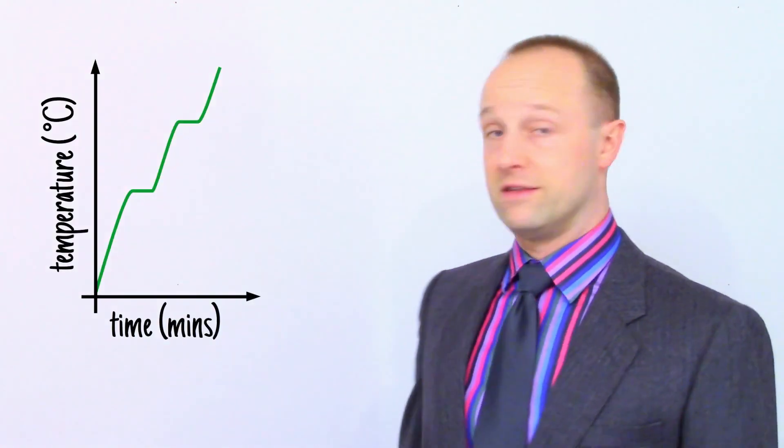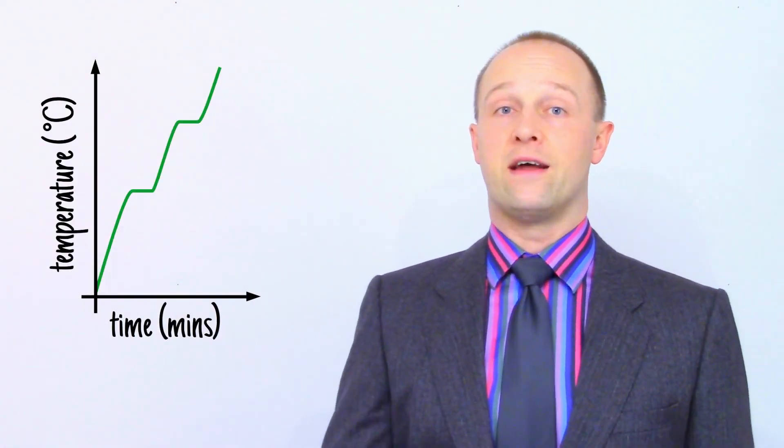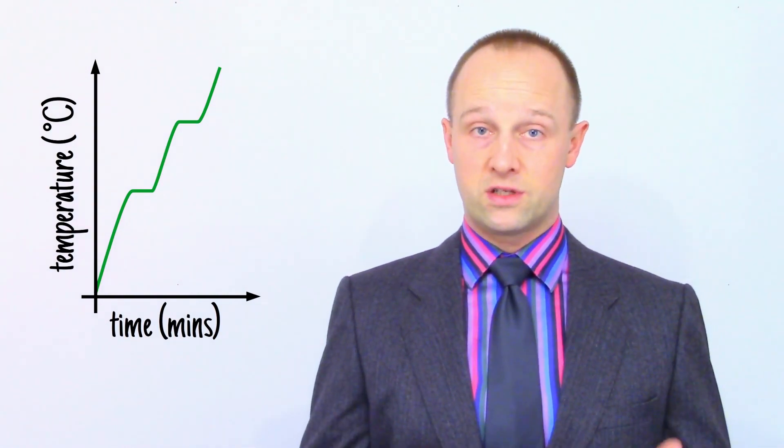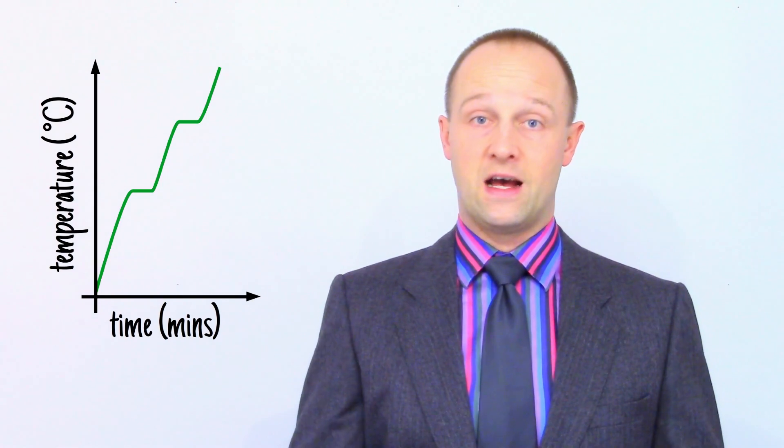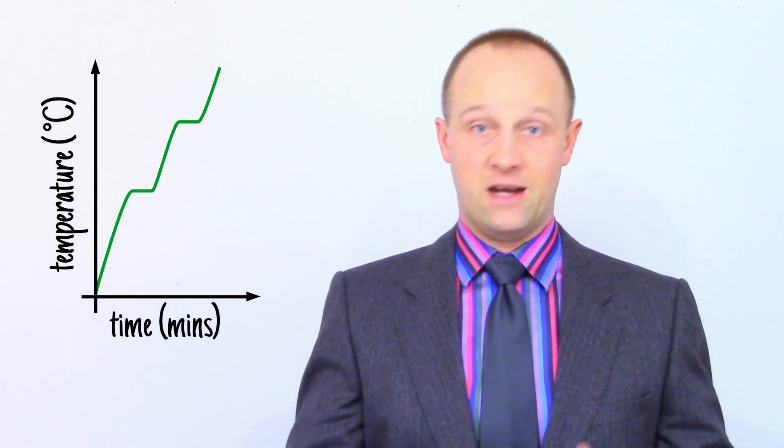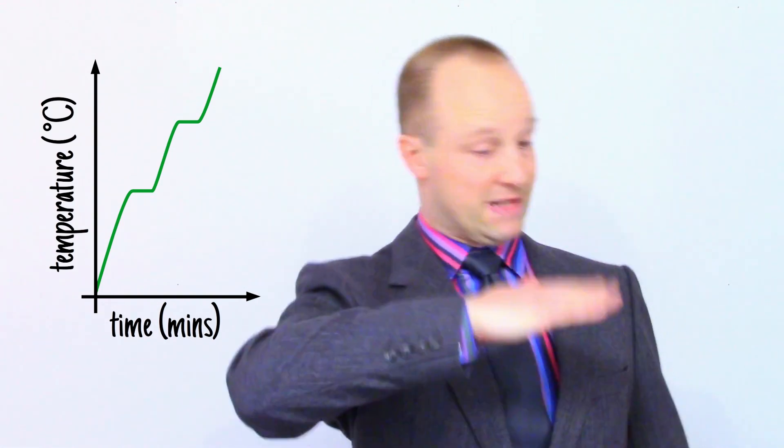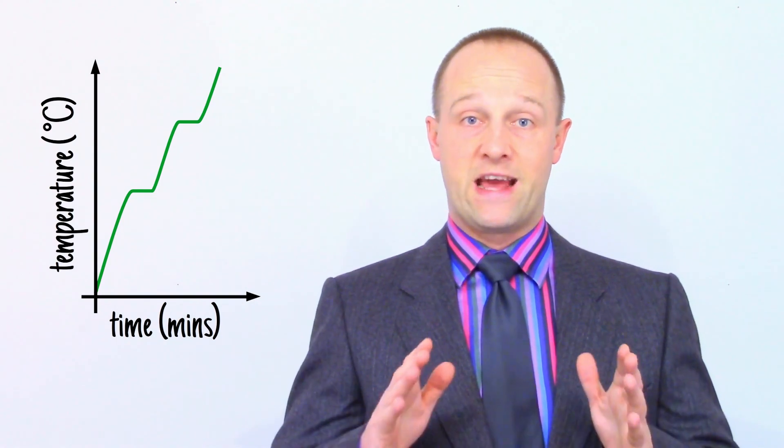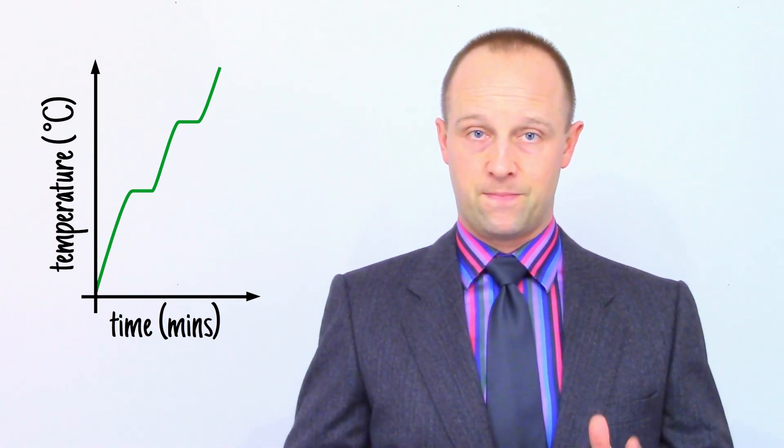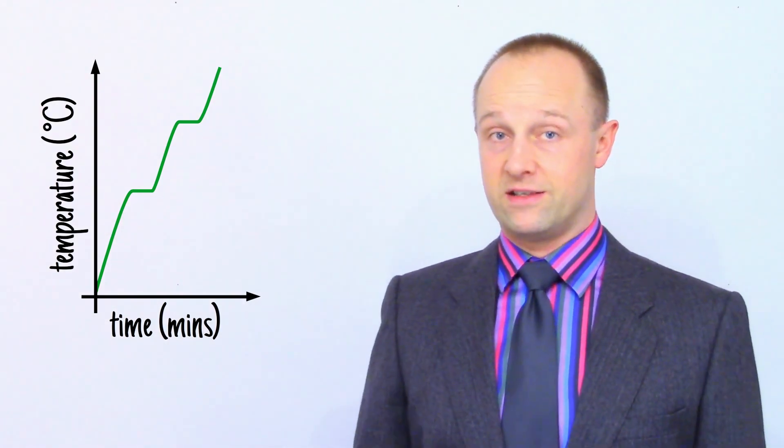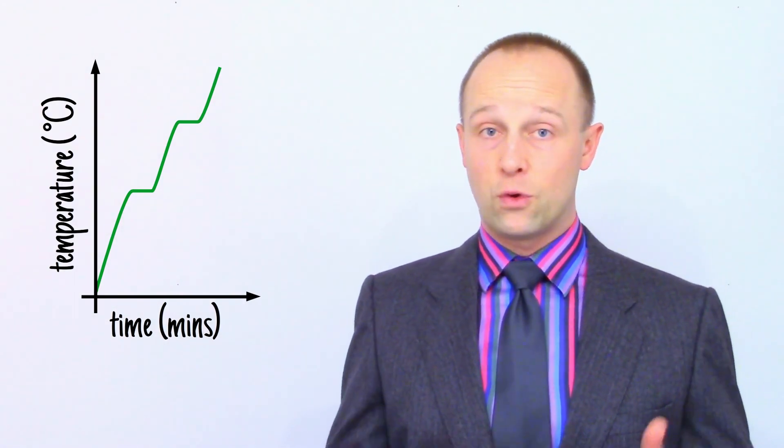If we continue to heat our substance now it's a liquid, the line rises linearly again until we get another section with zero gradient. By the way, you could also describe these sections of the graph as horizontal, but don't say they're flat. Remember, a flat surface could be at any angle. Stick to horizontal or better yet, zero gradient.